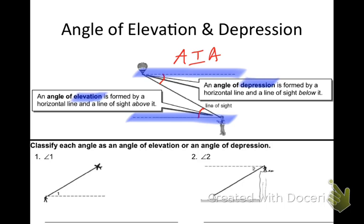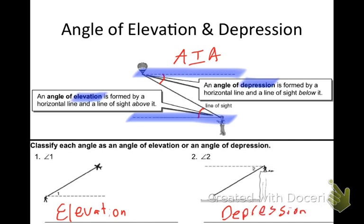Number one: classify each angle as an angle of elevation or an angle of depression. Angle one — is that an angle of elevation or depression, is the angle going up or going down? That'd be elevation. Nice job, so number one is elevation. Number two, what type of angle would that one be — elevation or depression? That is depression. Great work.